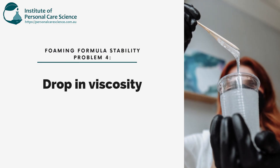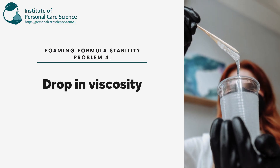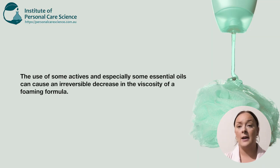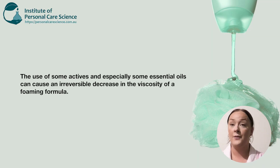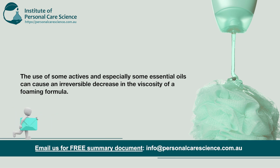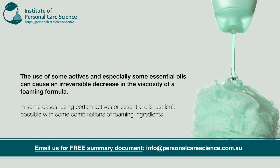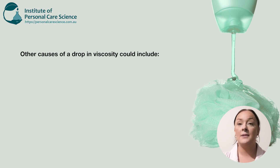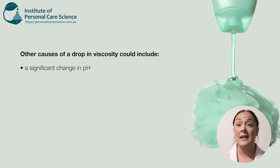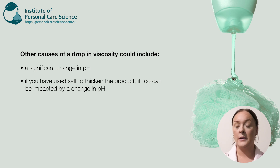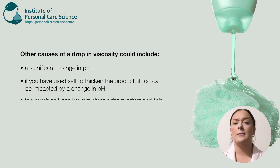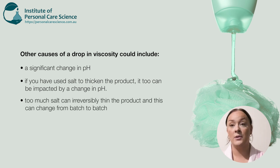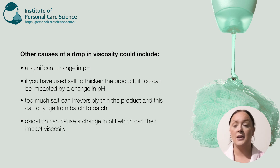My last common problem when it comes to the stability of foaming products is a drop in viscosity. The use of some essential oils and actives can irreversibly decrease the viscosity in surfactant products — in many cases, using certain actives and essential oils with certain surfactants simply won't work no matter how hard you try. Other common causes of a viscosity drop are a significant change in pH, or using salt to thicken your formula instead of a gum or polymer, as too much salt can irreversibly thin your formula. Oxidation can also cause a drop in pH, which can then lead to a drop in viscosity.